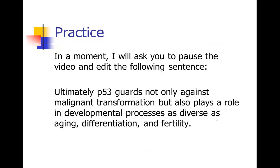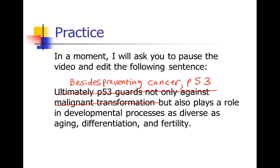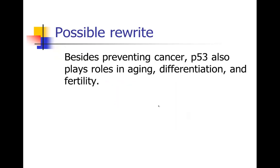Now I'm going to go through my edit on this sentence. 'P53 guards not only against malignant transformation' — malignant transformation is just talking about cancer, and 'guarding against' is just a way of saying 'preventing.' So: besides preventing cancer, P53 also plays roles — I'm making it plural because we're talking about more than one role — plays roles in developmental processes as diverse as. I don't think I need to say all of that. So: plays roles in aging, differentiation, and fertility. It's understood that's a diverse range. So: besides preventing cancer, P53 also plays roles in aging, differentiation, and fertility. See how much we could strip out without losing the meaning.